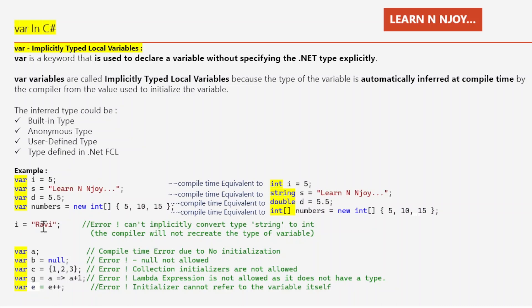Now, if I write i = "Ravi" — Ravi belongs to the string category, but i was already assigned 5 which belongs to int. So assigning a string value to an int data type will throw an error because the compiler can't implicitly convert a string to int. The compiler will not recreate the type of the variable. Also, declaring var a without initialization will produce an error, and var b = null is also not allowed — you cannot assign null to a var variable.